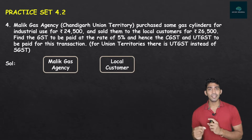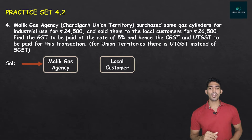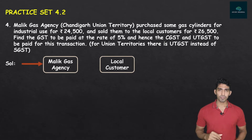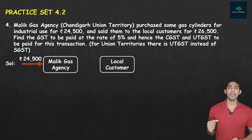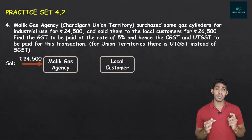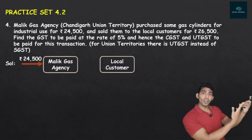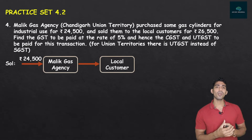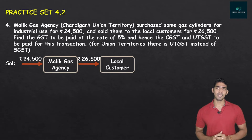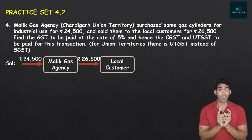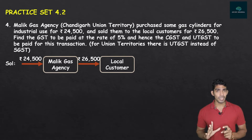Malik Gas Agency purchased the gas cylinders — so the arrow points toward him. He purchased them for Rs. 24,500. After that, he sold them to the local customer — the arrow points toward the customer — and he sold them for Rs. 26,500. Now I want to clarify a common confusion: 24,500 and 26,500 are NOT the input tax and output tax — these are taxable values.